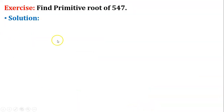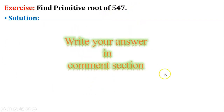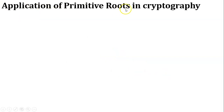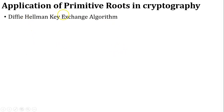Next exercise: find the primitive root of 547. Find the solution yourself and write your answer in the comment section. The concept of primitive roots is mostly used in the Diffie-Hellman key exchange algorithm in cryptography. If you want to know about the Diffie-Hellman key exchange algorithm, click on the above thumbnail.